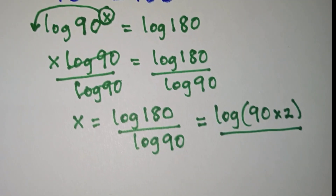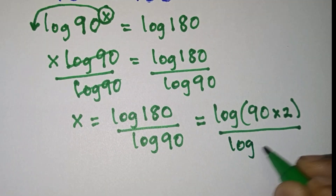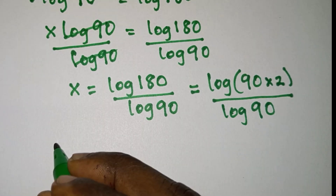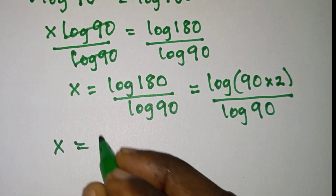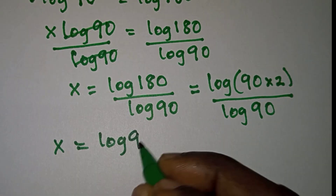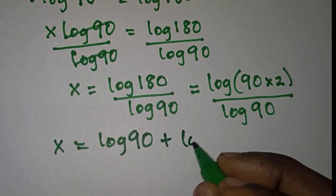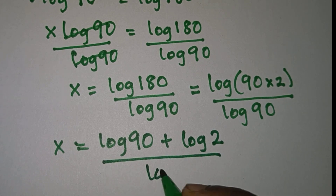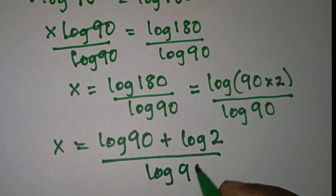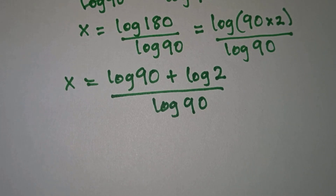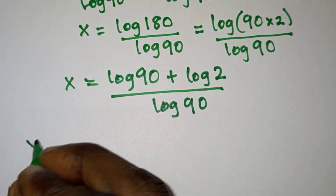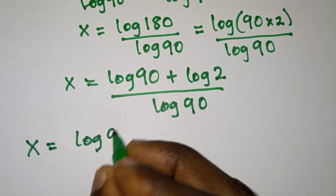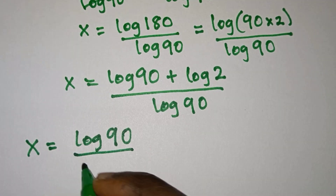Log 180 is the same as log of 90 times 2, then divided by log 90. The numerator is also the same as log 90 plus log 2, then divided by log 90. If we split this, we're going to have x is equal to log 90 divided by log 90, plus log 2 divided by log 90.